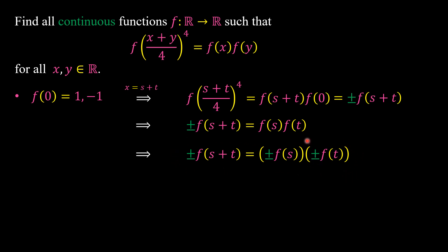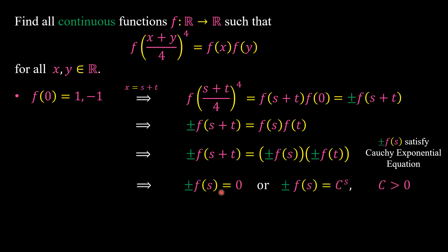This functional equation shows that plus or minus f(s) satisfies the Cauchy exponential equation. The only continuous solutions of the Cauchy exponential equation are plus or minus f(s) equal to 0, or plus or minus f(s) equal to c to the power of s, where c is a positive real number. Since f(0) equals 1 or minus 1, the solution plus or minus f(s) equal to 0 is not possible.